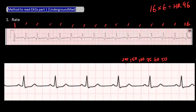What this means is that if there is one big box between R waves, the heart rate is approximately 300. If there are two big boxes, the heart rate is approximately 150. If there are three big boxes between R waves, the heart rate is approximately 100, and so on. In this EKG, you can see that the rate is just slightly less than 75.